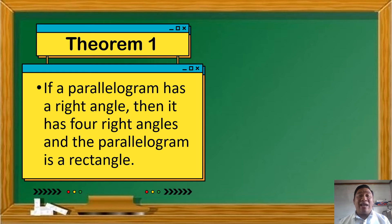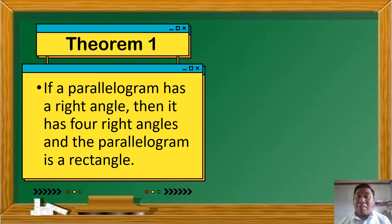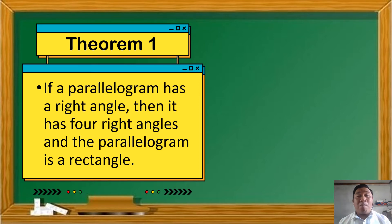Ang gusto lang sabihin ng theorem na ito na kung sa isang parallelogram ay may isang right angle, ibig sabihin lahat ng angles na nandito sa parallelogram na ito ay puro right angles. Ibig sabihin, meron siyang four right angles, at yung parallelogram na yun ay isang rectangle.